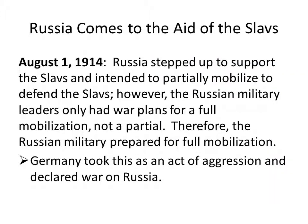About a week later, Russia stepped up to support the Slavs and intended to partially mobilize their army to defend them. However, the Russian military leaders only had war plans for full mobilization — it would have taken months to create plans for a partial mobilization. Therefore, the military said these are the plans we have, let's move ahead, and they prepared for full mobilization of their army. Germany took this as an act of aggression and declared war on Russia.